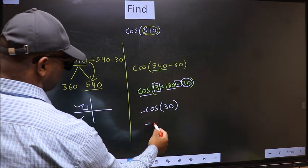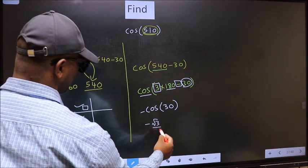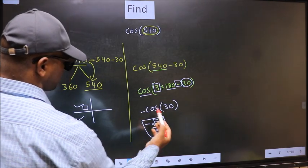So, negative cos 30 is root 3 by 2. This is our answer.